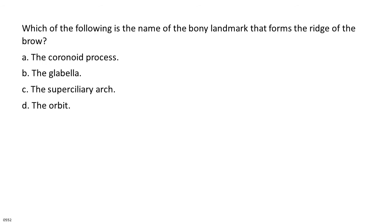Which of the following is the name of the bony landmark that forms the ridge of the brow? A. The coronoid process. B. The globella. C. The superciliary arch. D. The orbit.